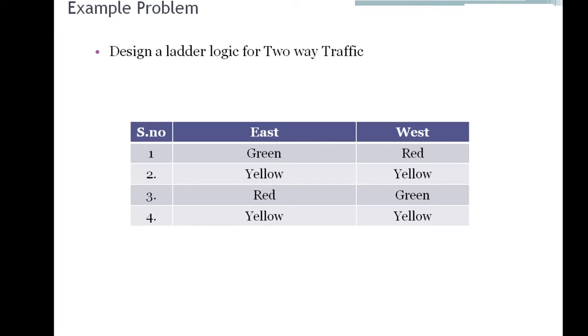In this session we are going to see our last example, the fourth one. We'll design a ladder logic for a two-way traffic control. In your exercise you will have a three-way traffic control. This is one of the classic examples in ladder logic — you can design the concept as per your requirement or the customer's requirement. I have taken east and west directions since it is a two-way traffic system.